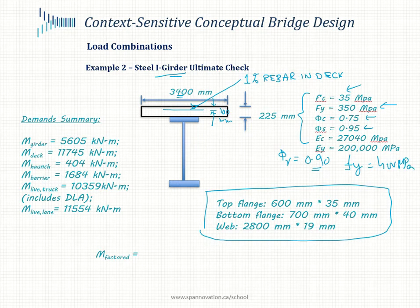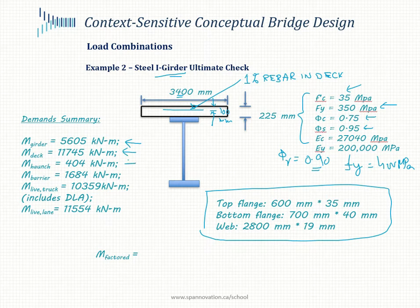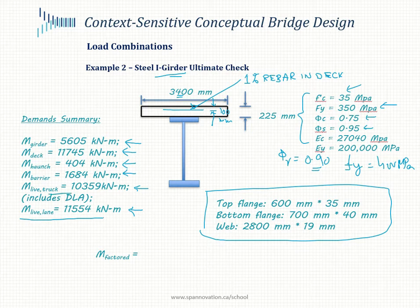We're looking at a positive section with a positive bending moment. Here are the component bending moments: the girder, deck, haunch, barrier, live load for the truck including DLA, and the live load for the lane. You can clearly see that the lane governs over the truck with the DLA. Let's first calculate our factored bending moment.